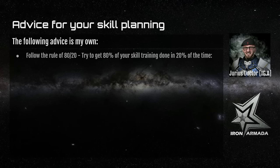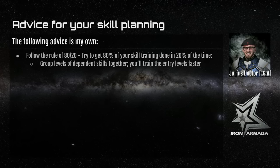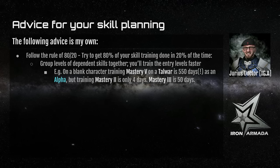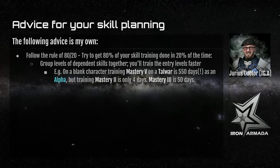Also good to keep in mind is the rule of 80-20, which brings me back to the Mastery tab. Grouping levels of skills together — dependent skills specifically — will help you train entry levels faster. On a blank character, training Mastery 5 on a Talwar Minmatar Destroyer takes 550 days on an Alpha Clone — a very long train. But Mastery 2 is only 4 days, and Mastery 3 is only 50 days. So you can get a significant portion of the necessary skills to pilot that ship in under two months as an Alpha Clone. If a ship is being recommended to you, consider looking at the Mastery tab — it may give you the shortest route, but that doesn't necessarily mean it's been optimized.